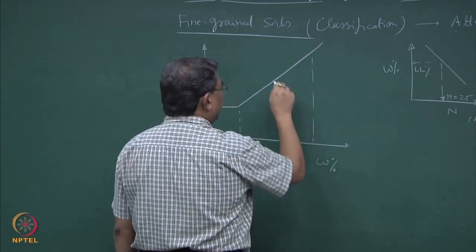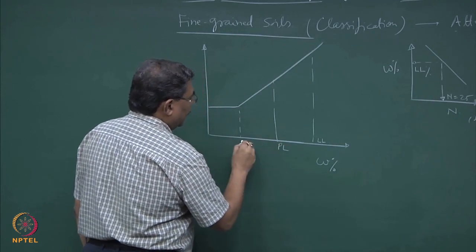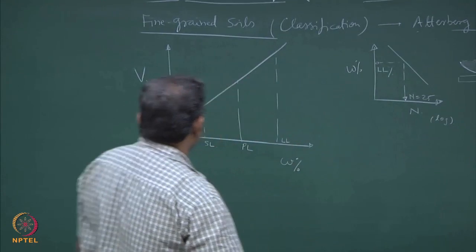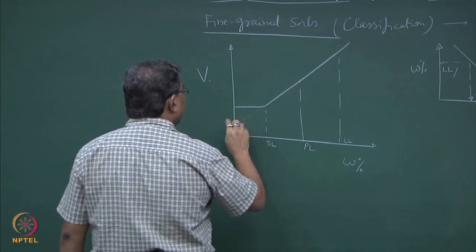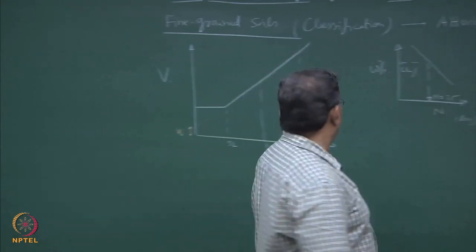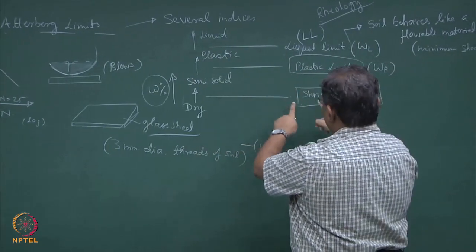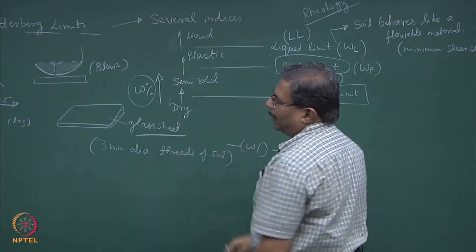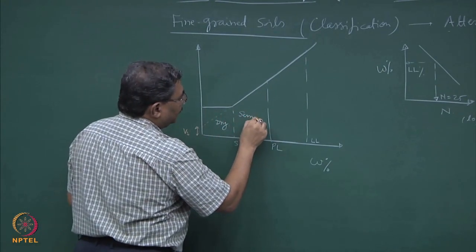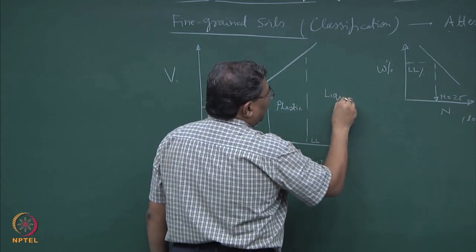If I plot total volume of the soil with respect to moisture content, it so happens that up to a certain limit of moisture the volume does not change. And beyond this there is a linear variation in the volume of the soil. This is where I can define the three indices. The first one is liquid limit, this is your plastic limit, and this is shrinkage limit. One interpretation of this graph is: if I extend this portion back and find out the intercept on the volume axis, this is the volume of the solids.